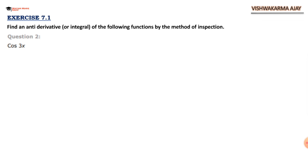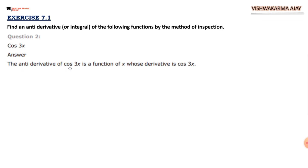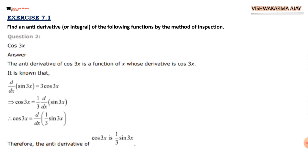Question 2: cos 3x — a similar kind of question. The antiderivative of cos 3x is a function of x whose derivative is cos 3x. We know that the derivative of sin x is cos x, so the derivative of sin 3x is cos 3x times the derivative of 3x, which gives 3 cos 3x. Therefore the antiderivative of cos 3x is 1 upon 3 sin 3x.